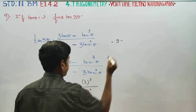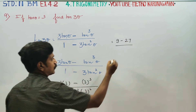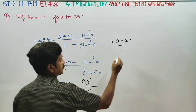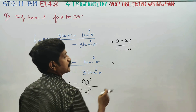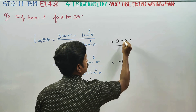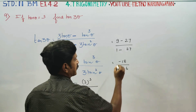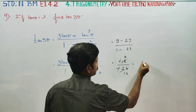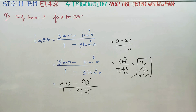3 threes are 9, minus. 3 cubed is 27, that is 3 into 3 into 3. 1 minus — this is 3 squared, which is 9, and 9 nines are 27. After cancelling, you will be getting 18 with a negative symbol. 27 minus 1 is 26 with a negative symbol. After cancellation, 9 by 13 is your final answer.